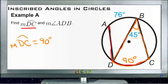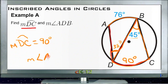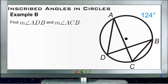For the measure of angle ADB, that angle intersects arc AB, and arc AB is 76 degrees. So angle ADB must be one half of that, which is 38 degrees. The measure of angle ADB is 38 degrees.